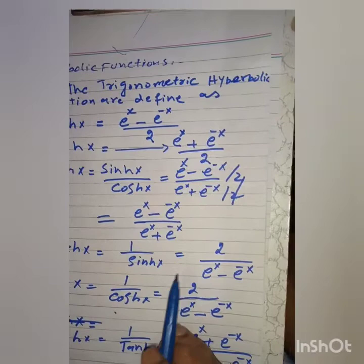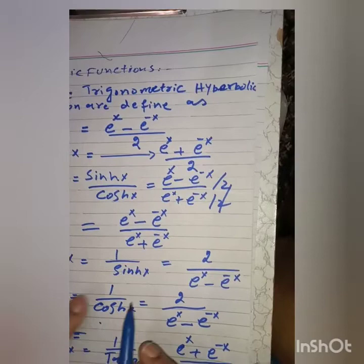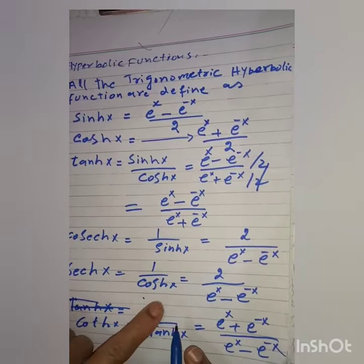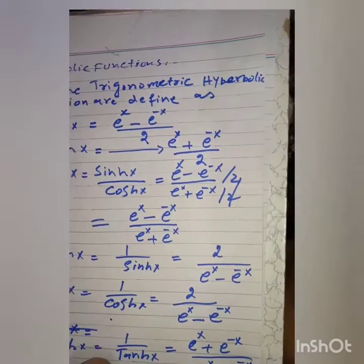Similarly, cosecant hyperbolic x will be equal to 1 by sinh x, which is equal to 2 dividing by e to the power x minus e to the power minus x. Similarly, secant hyperbolic x will be equal to 1 by cosh x, equal to 2 dividing by e to the power x plus e to the power minus x. Similarly, cotangent hyperbolic x is equal to 1 by tanh x, which equals e to the power x plus e to the power minus x dividing by e to the power x minus e to the power minus x.